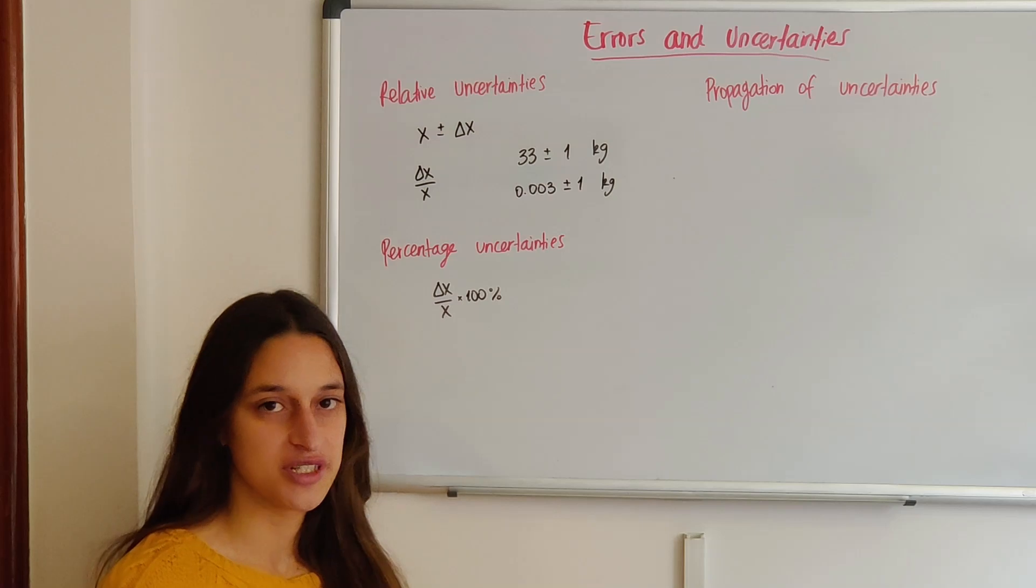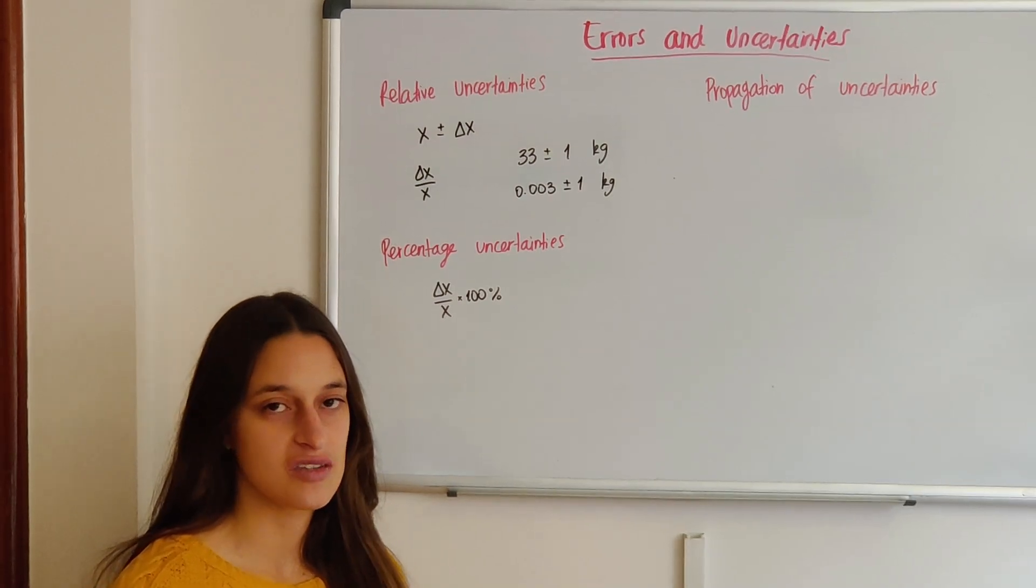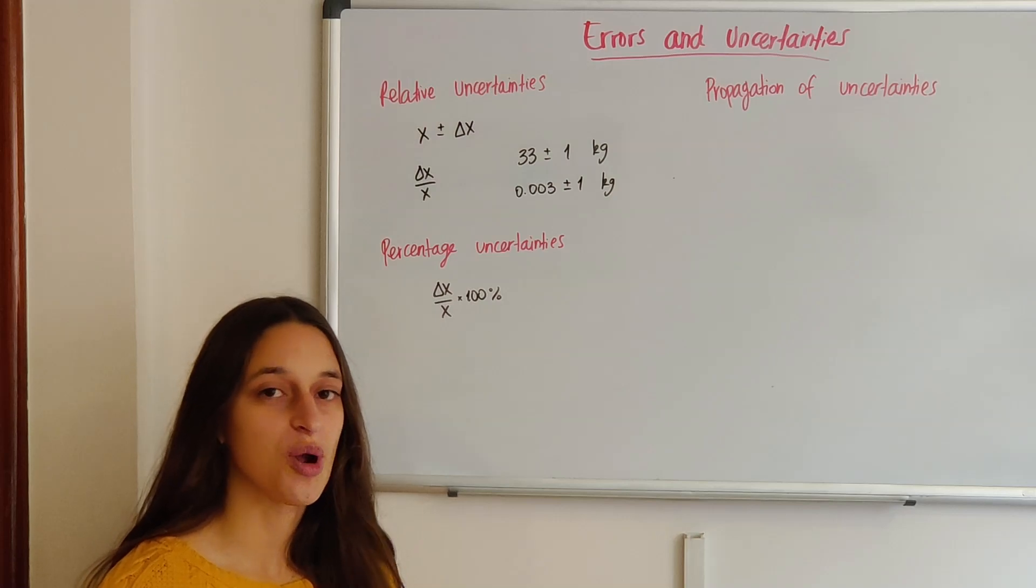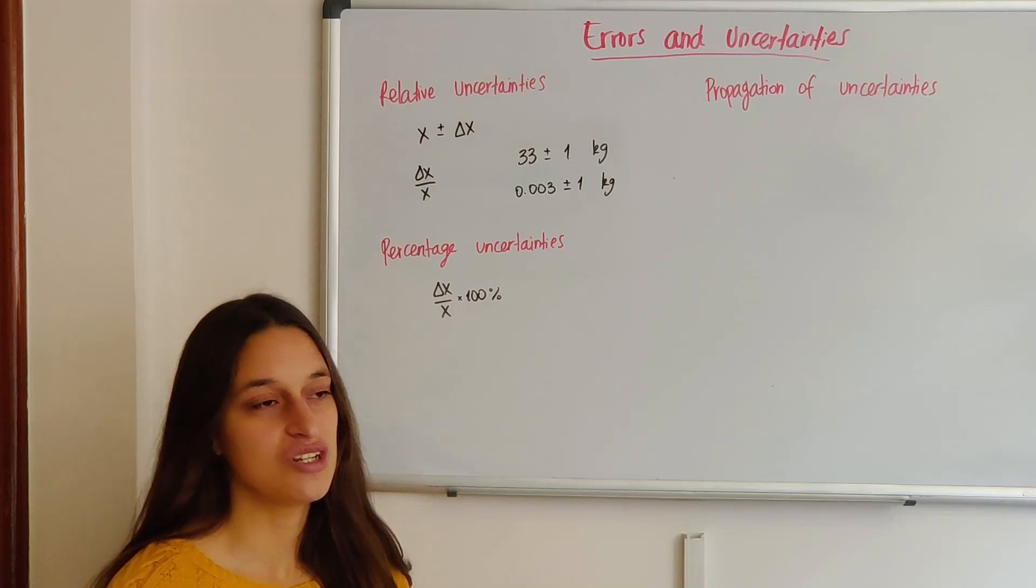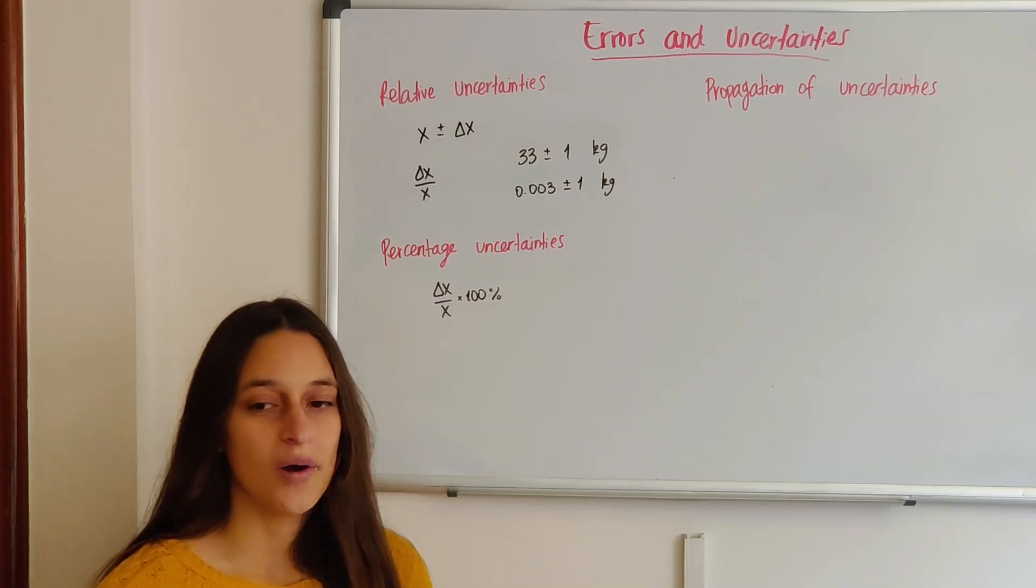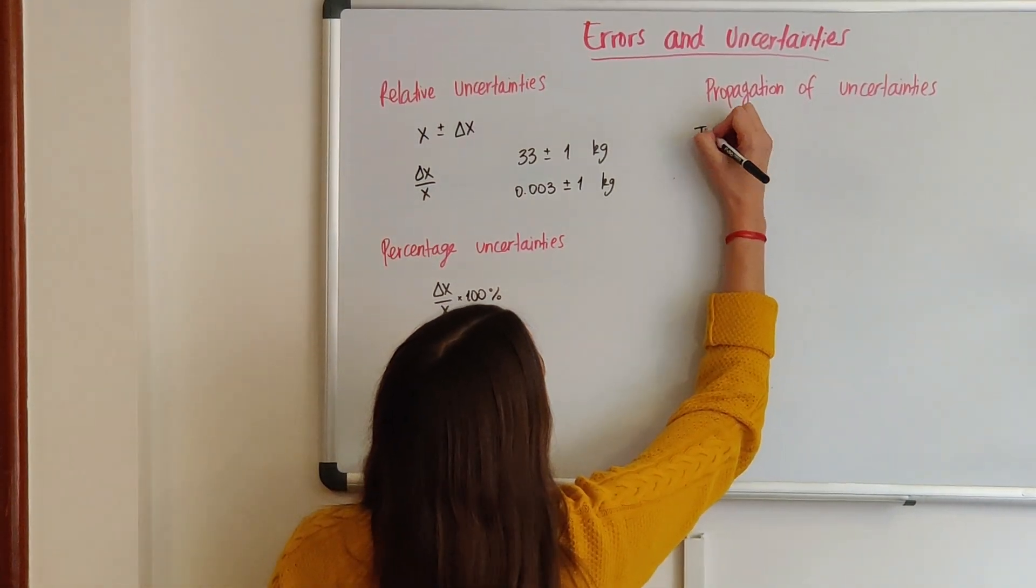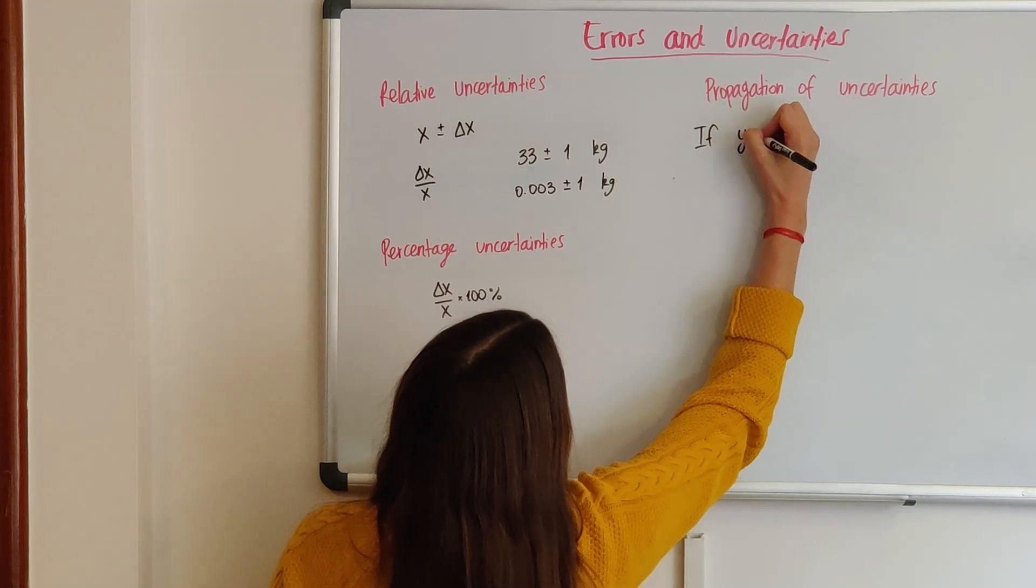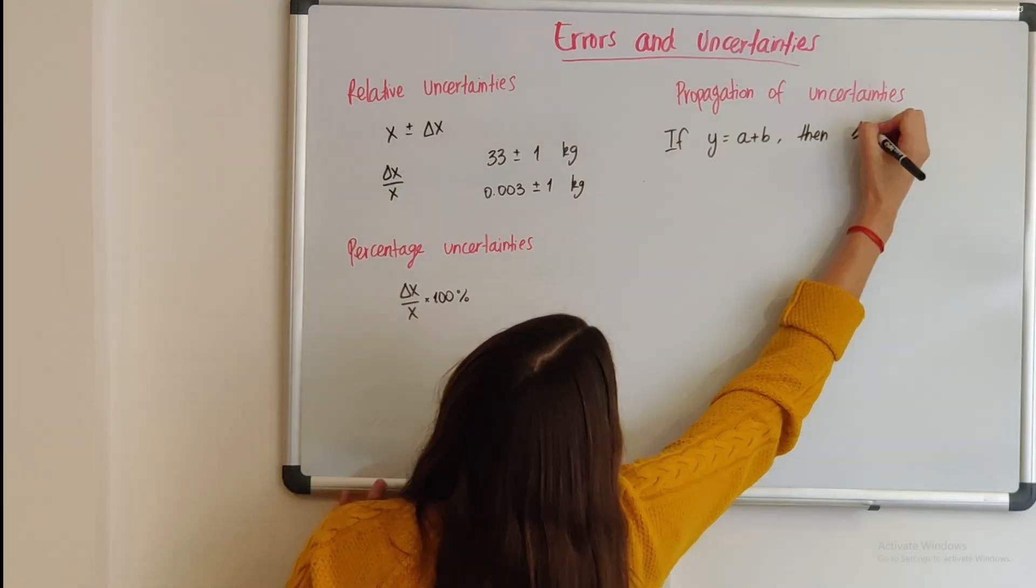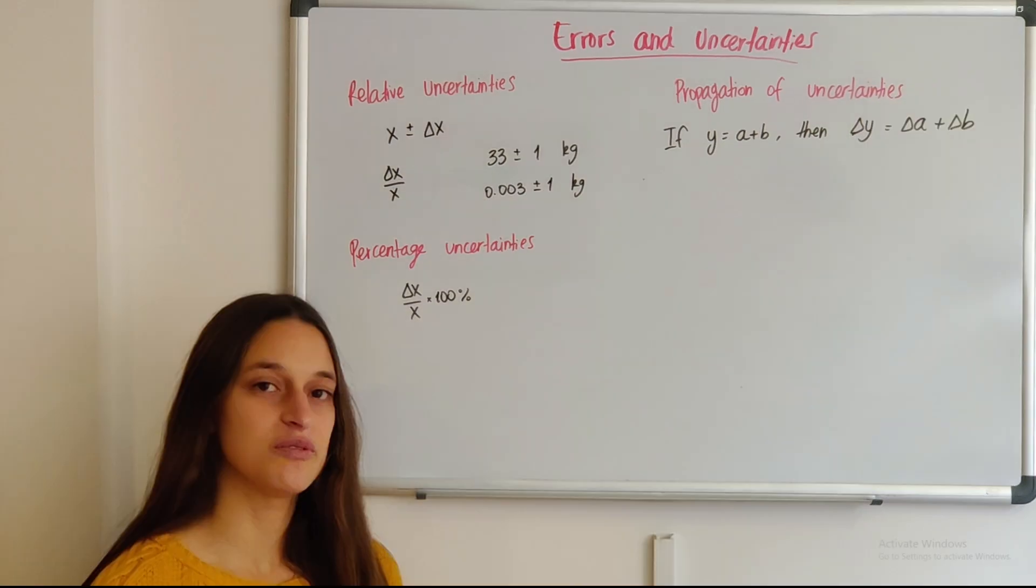In the data booklet of the IB Physics Standard Level or High Level course, you will find a section called propagation of uncertainties. They give you three lines of information that look a little bit confusing, but they're easier than they look. So the first one says, if y equals a plus b, then delta y equals delta a plus delta b.